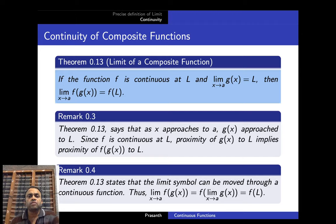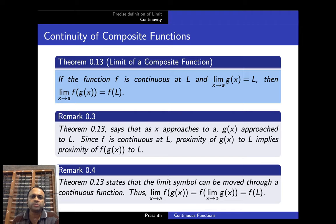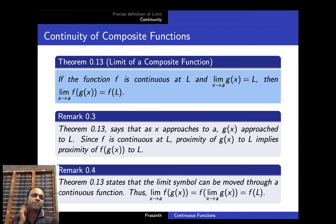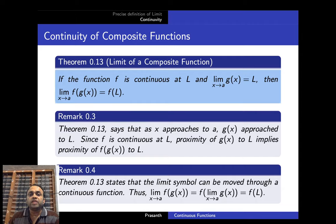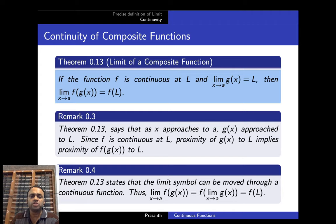Now we will check the continuity of composite functions. If the function f is continuous at L and limit x→a g(x) = L, then limit x→a f(g(x)) = f(L). That is, as x approaches a, g(x) approaches L, and since f is continuous at L, proximity of g(x) to L implies proximity of f(g(x)) to f(L). Also, theorem 13 — the limit of a composite function — says we can take the limit inside: limit x→a f(g(x)) = f(limit x→a g(x)) = f(L).